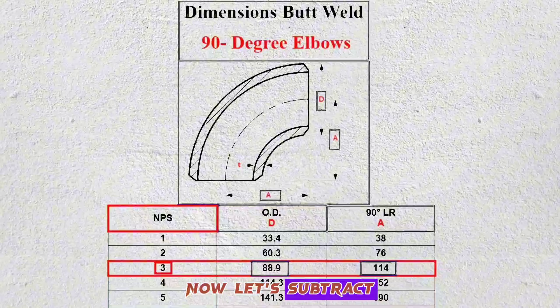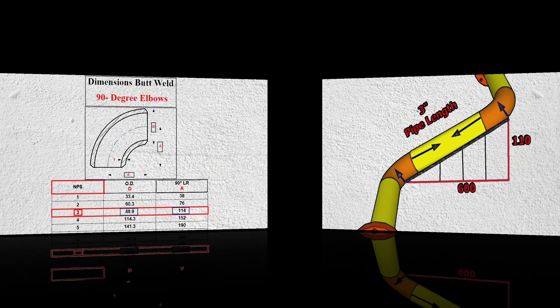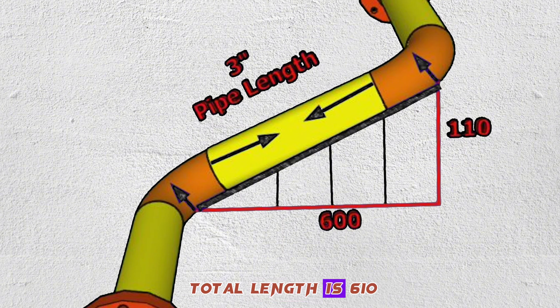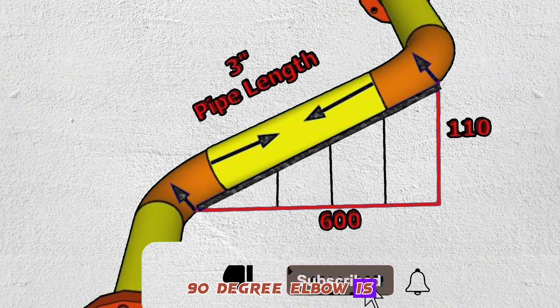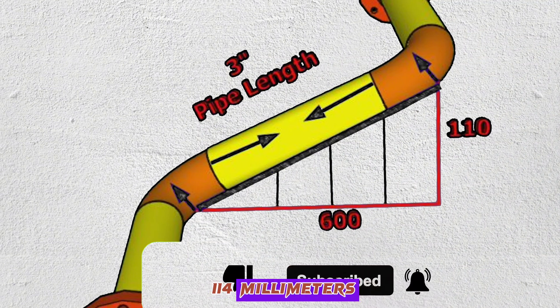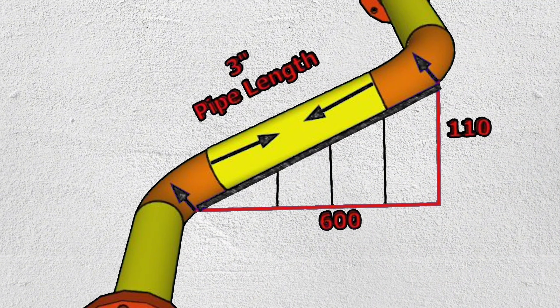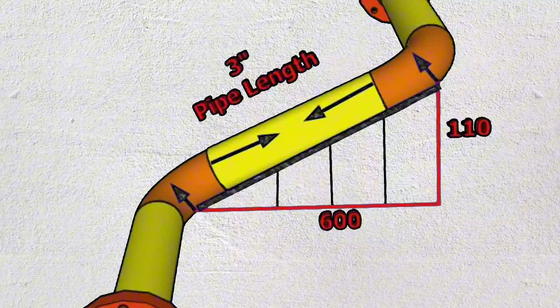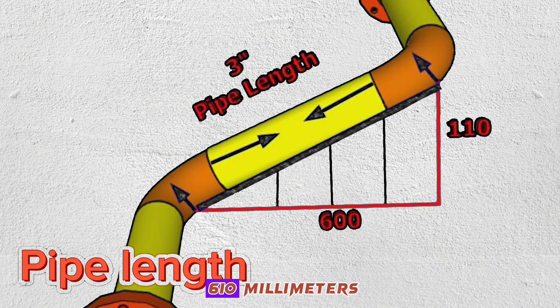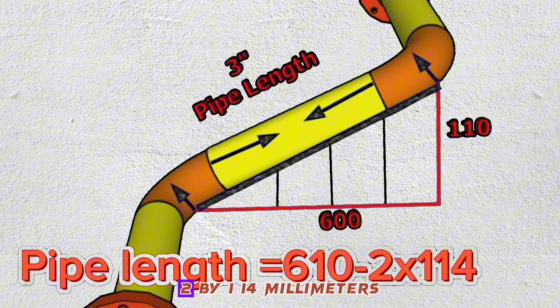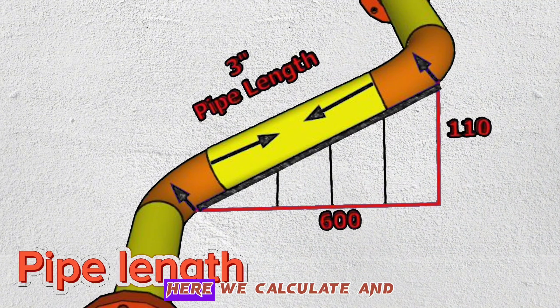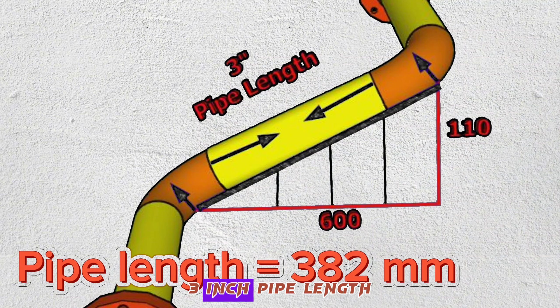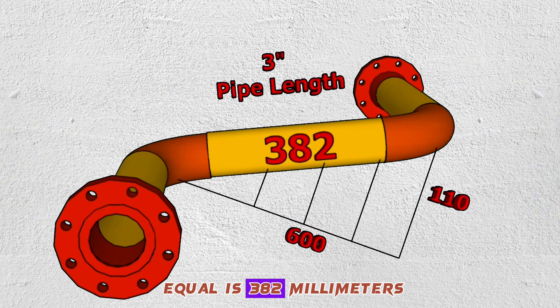Now let's subtract the lengths of the elbows from the total length. We calculated that the total length is 610 and the length of the 3 inch 90 degree elbow is 114 millimeters. Pipe length equals 610 millimeters minus 2 by 114 millimeters. Here we calculate and find that 3 inch pipe length equals 382 millimeters.